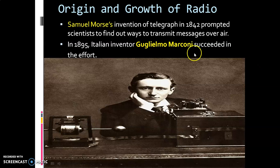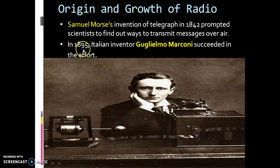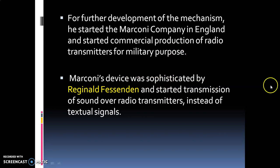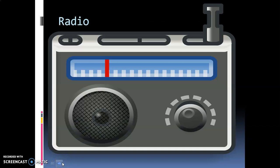Origin and growth of radio: Samuel Morse invented the telegraph in the year 1842. His invention paved the way to transmit messages over air, which prompted scientists to find further ways to do so. In 1895, Italian inventor Guglielmo Marconi succeeded in the effort. Marconi started a company in England and began commercial production of radio transmitters for military purposes. Marconi's device was further developed by Reginald Fessenden, who started transmission of sound over radio transmitters instead of textual signals. I am sharing the image of radio here.